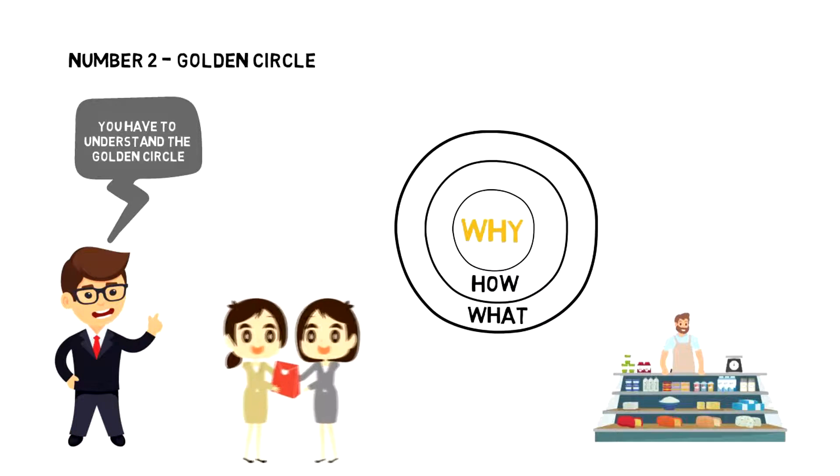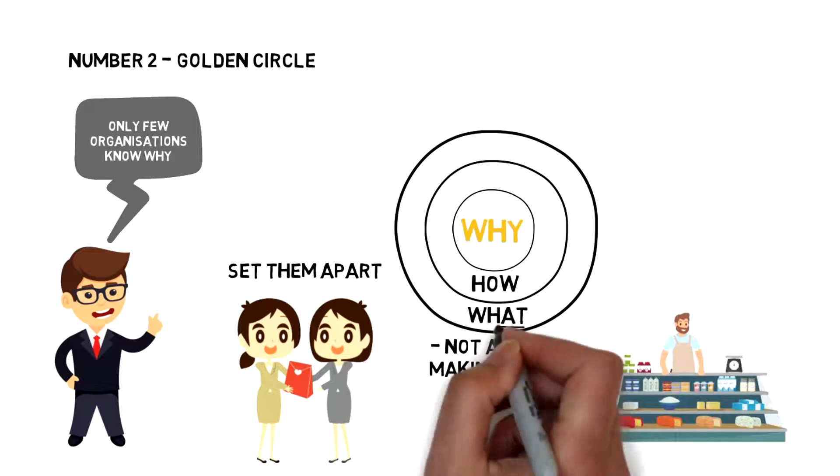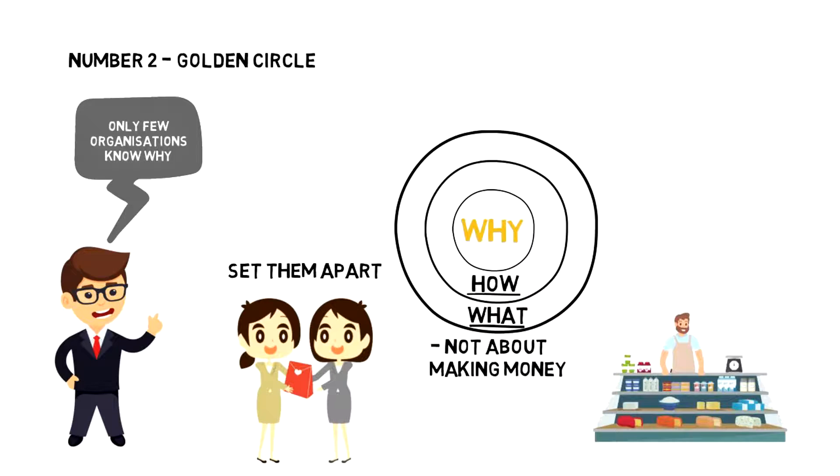Some organizations know their how. These are the things that make them special or set them apart from the competition. Only a few organizations know why they do what they do. Why is not about making money. That is a result of what and how. Why is a purpose, cause or belief. It's the very reason the organization exists in the first place.